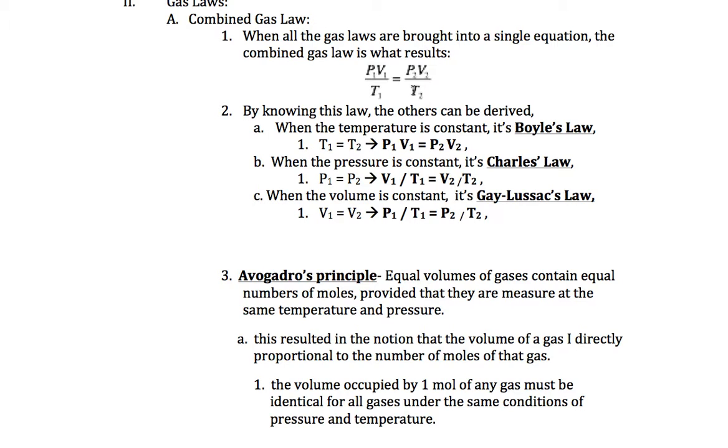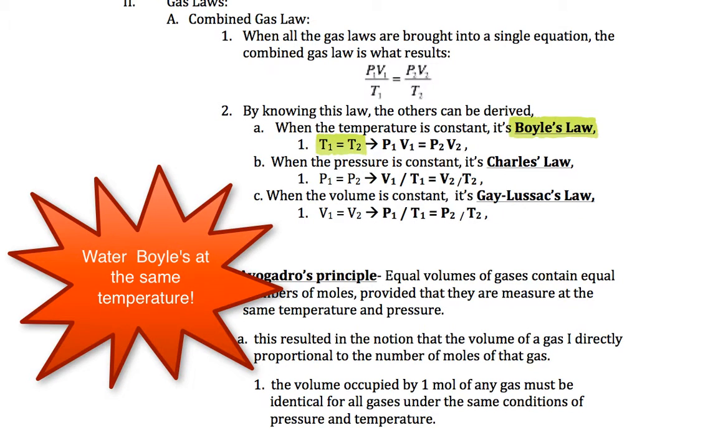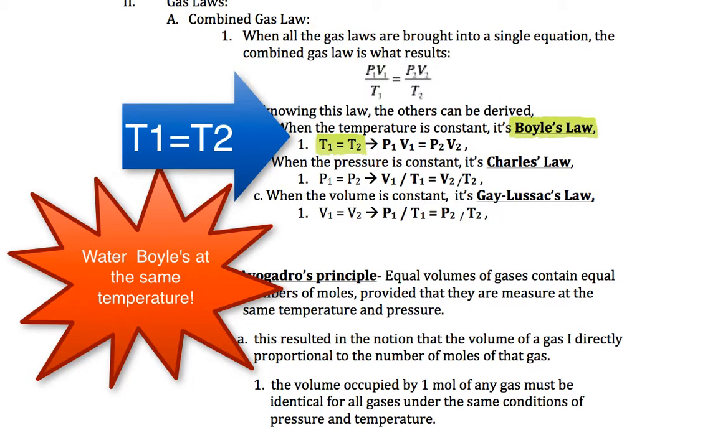So PV over T equals PV over T. Now, if we look at the same temperature, T1 equals T2, it's Boyle's law. The way you can remember that is water boils at the same temperature.